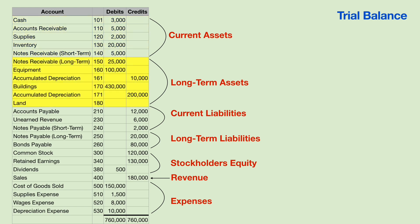Long-term assets are things that you will use longer than 12 months into the future. A current liability is what you're going to pay off within 12 months. Accounts payable is something you'll usually pay down to a zero balance once a month. A note payable could be short-term or long-term. A long-term note payable is something you'll be making payments on longer than 12 months into the future. And a bond payable is a very large note — it represents borrowing big money.